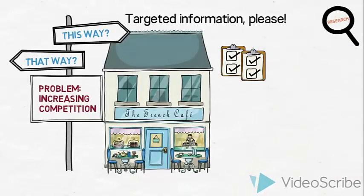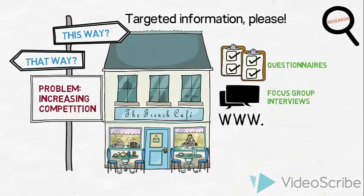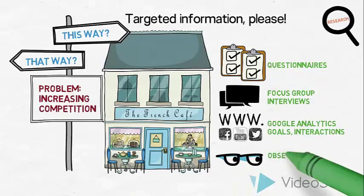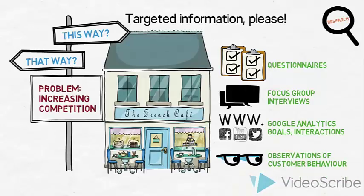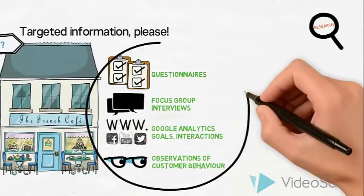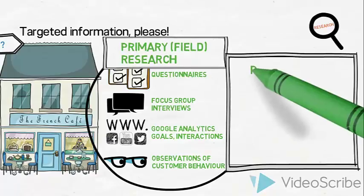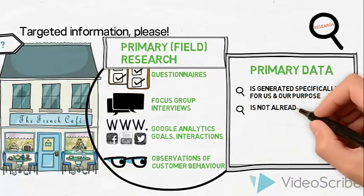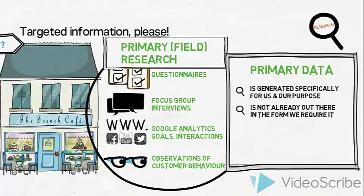Now let us imagine that French Café would like to obtain some information which is targeted specifically at their own information needs. They could design a suitable questionnaire and interview customers, invite customers for a focus group interview, set up specific goals in their Google Analytics to track how users interact with their online booking feature, and track social media interactions. They could also carry out other observations of customers' behavior, both on their website and in their café. This type of research is called primary or field research. Primary data is generated specifically for us and for our specific purpose. Primary data is not already out there in the form that we require it. We could argue that the online behavioral data already exists, but French Café is now setting up specific filters to track and show an exact behavior.